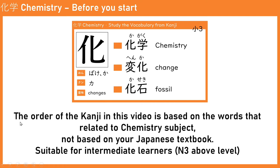As written here, the order of the kanji in this video is based on my choices — on the words related to chemistry subjects. This is not based on your Japanese textbooks. So for example, if you are a beginner who just started learning kanji from the N5 or N4 level of JLPT,